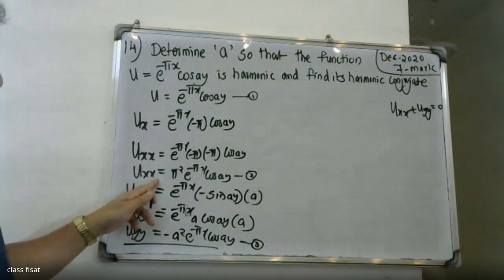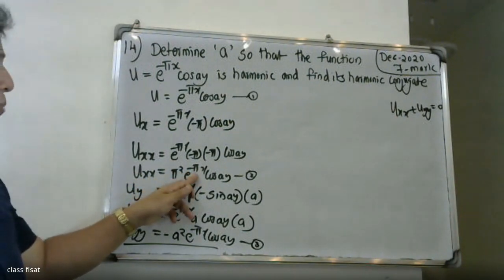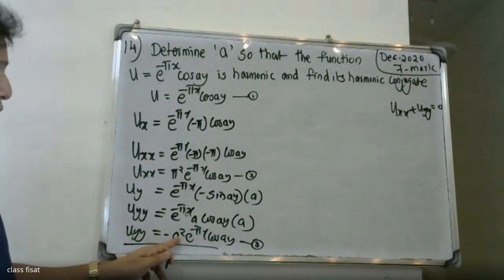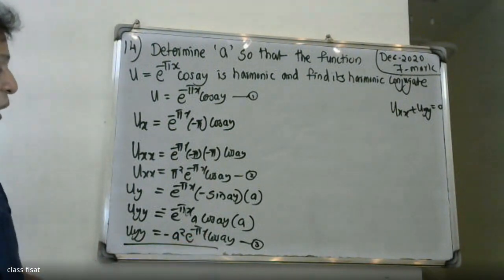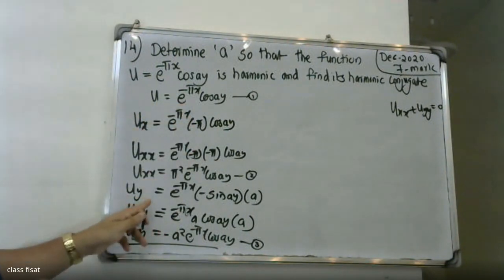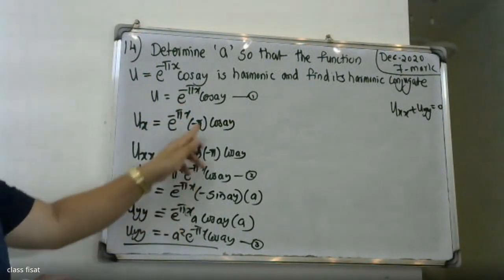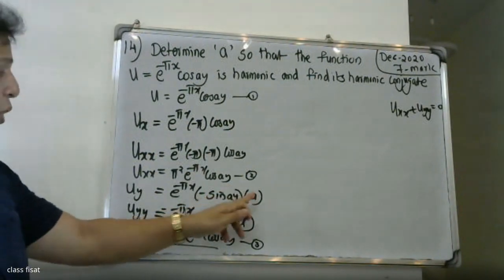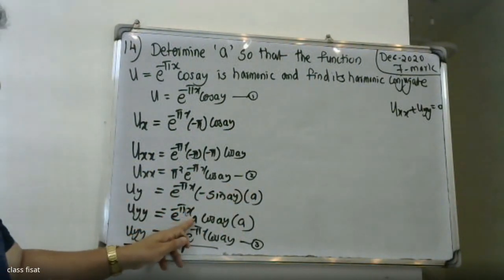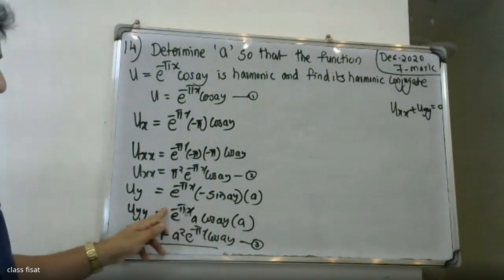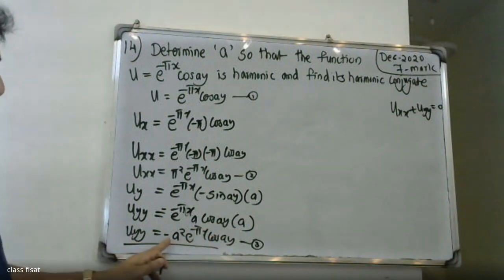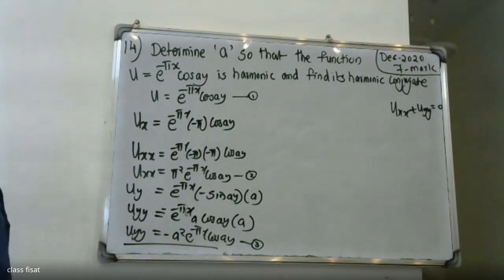u_xx = π² e^(-πx) cos(ay). Now differentiate with respect to y: u_y = e^(-πx) times minus sin(ay) into a, giving u_y = -a e^(-πx) sin(ay). Then u_yy = -a² e^(-πx) cos(ay).